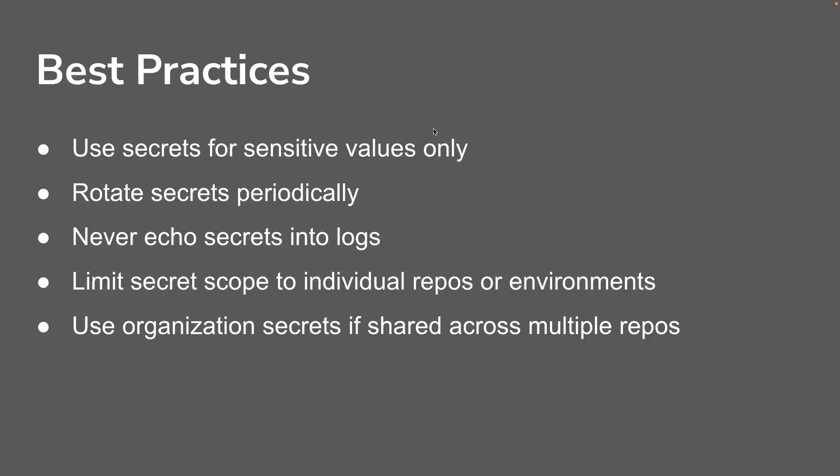The secret value is still accessible to your workflow steps — it just won't be logged. That said, as a best practice, never try to directly echo secrets. You can manipulate strings with spaces or slashes to work around the masking. Best practices include: only use secrets for sensitive values, rotate secrets periodically, never echo secrets into logs, limit secret scopes to individual repos or environments, and use organization secrets when sharing across multiple repos.